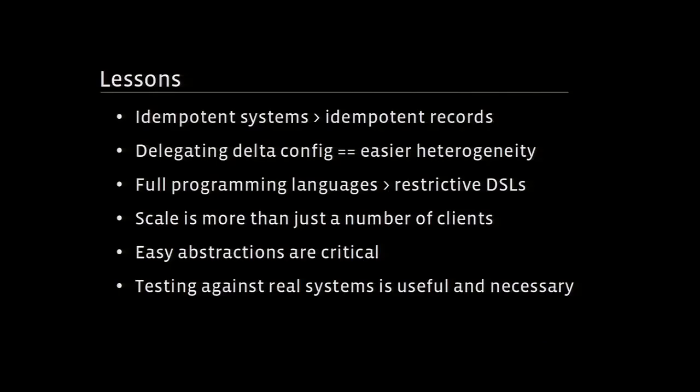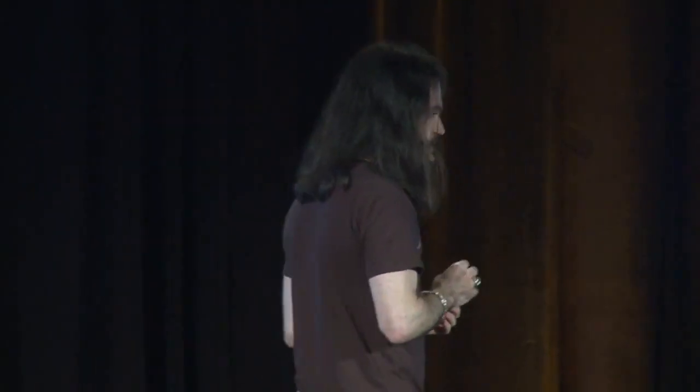We learned a lot of lessons as we replaced one infrastructure with another. Idempotent systems are way better than idempotent records in a very large environment, because no one ever cleans anything up — and I think this applies to small environments too. We also learned that delegating delta configuration makes for far easier heterogeneity: if you can delegate the bits and pieces you don't care about to someone who does, it's one less thing you have to worry about. Full programming languages are better than restrictive DSLs — CFEngine 2's DSL is incredibly restrictive, and not being able to loop is just not okay.